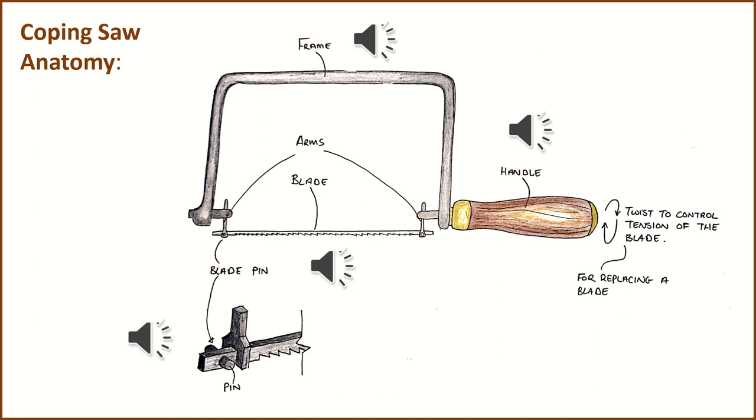It's held onto the actual saw just by two pins, as you can see in this sketch. Another thing with a coping saw blade is that they're easy to break, so when they do get a bit blunt they can snap. But they're very cheap and very easy to replace, so there'll be no point resharpening or anything like that—you just simply get a new blade.